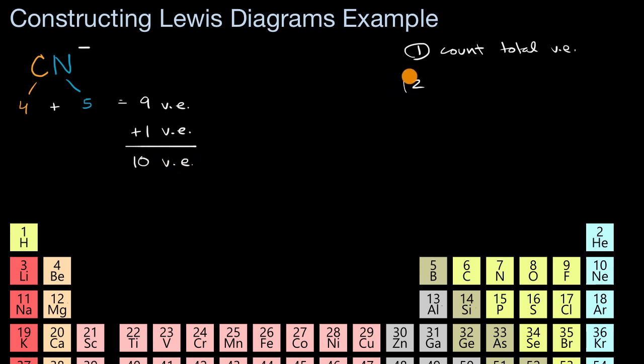Now the next step is to try to draw single bonds and identify a central atom. We only have two atoms here, so really neither feels central. Let me put a carbon and a nitrogen next to each other and draw one single bond. By drawing that one single bond, I have now accounted for two valence electrons, so now I am left with eight valence electrons.